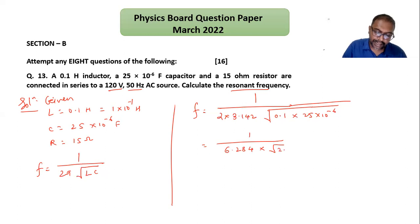I can write 25 × 0.1 as root of 2.5, and 10⁻⁶ under the root becomes 10⁻³, which shifts up to 10³. This then becomes 1000 divided by the denominator.